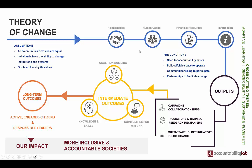In this example — I downloaded this image from Accountability Lab, so you can Google 'Accountability Lab theory of change' — they want to achieve an impact of a more inclusive and accountable society, which is a long-term outcome. The picture shows that first you have to build relationships, capacitate the human capital, secure financial resources, and information. Once these are in place, you achieve outputs that lead to better collaborations through campaigns, training, feedback mechanisms, and multi-stakeholder initiatives for policy change.